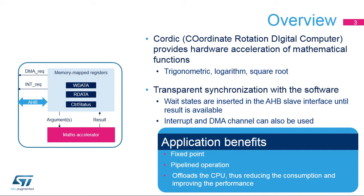The Cordic block is an AHB slave that inserts wait states when the Cortex-M4 requests the result until the operation is completed. No input-output driver is therefore needed. Another approach consists in enabling the Cortex-M4 to handle other processing while the Cordic calculation is in progress. In this case, an interrupt request indicates that the result is available. DMA channels can be implemented to provide the arguments from memory and to write the result to memory. The Cordic block supports pipelined operation: next arguments can be provided while the calculation with the current arguments is in progress.